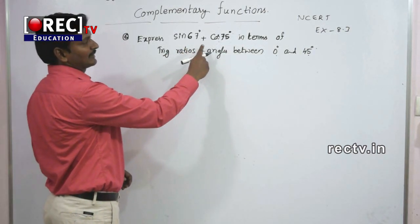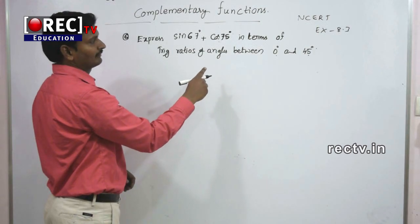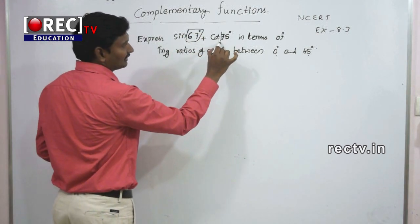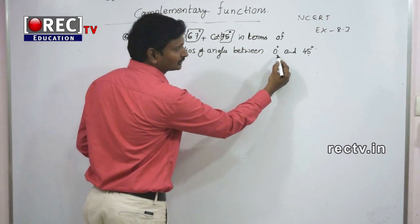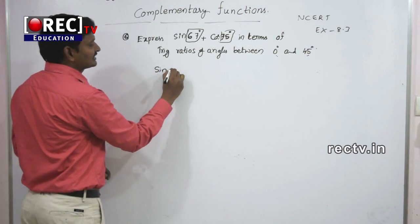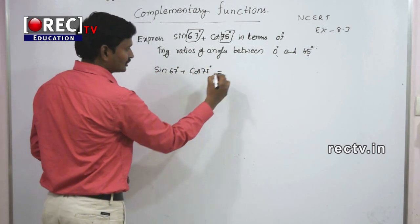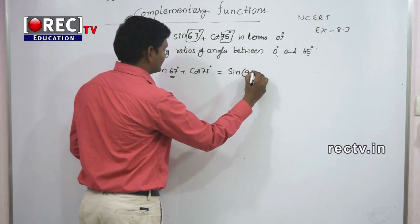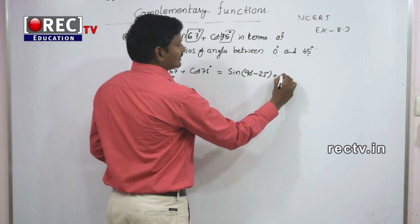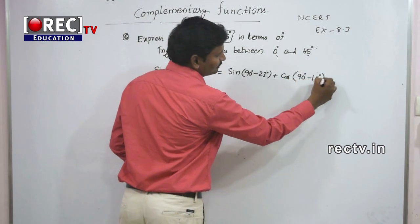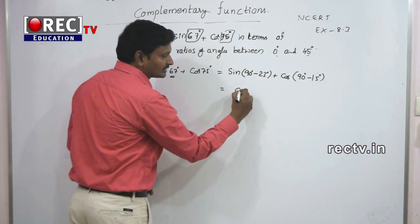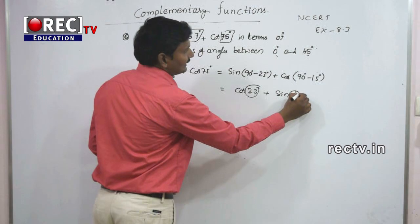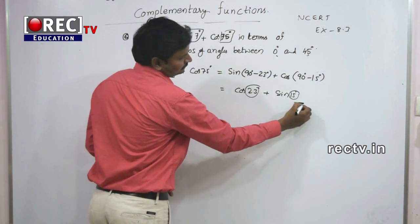Seventh question: express sin67° + cos75° in terms of trigonometric ratios of angles between 0° and 45°. We write 67° = 90° - 23° and 75° = 90° - 15°. Using sin(90° - θ) = cos θ and cos(90° - θ) = sin θ, the expression becomes cos23° + sin15°. Both 23° and 15° lie between 0° and 45°, so this is the answer.